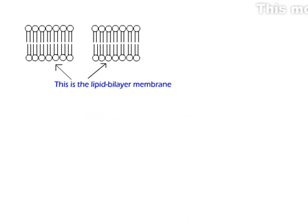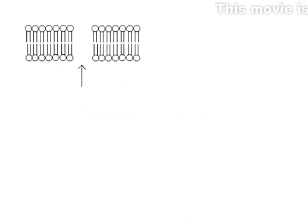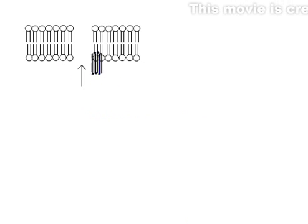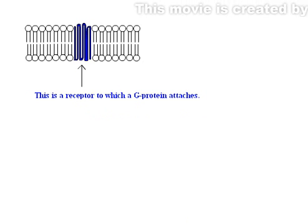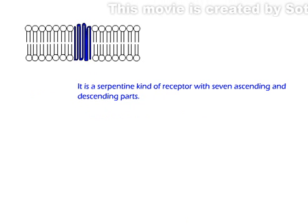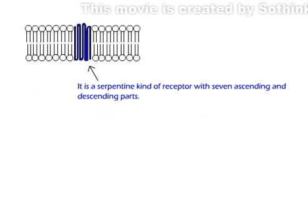This is a lipid bilayer membrane. This is a receptor to which a G-protein attaches. It is a serpentine kind of receptor with 7 ascending and descending parts.